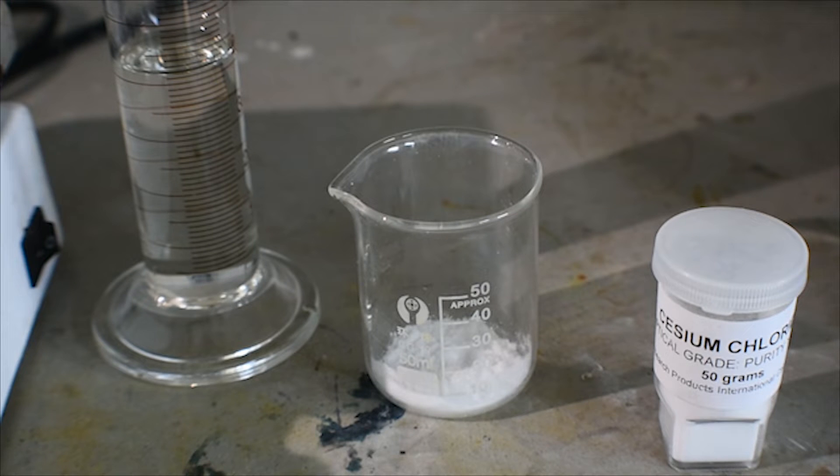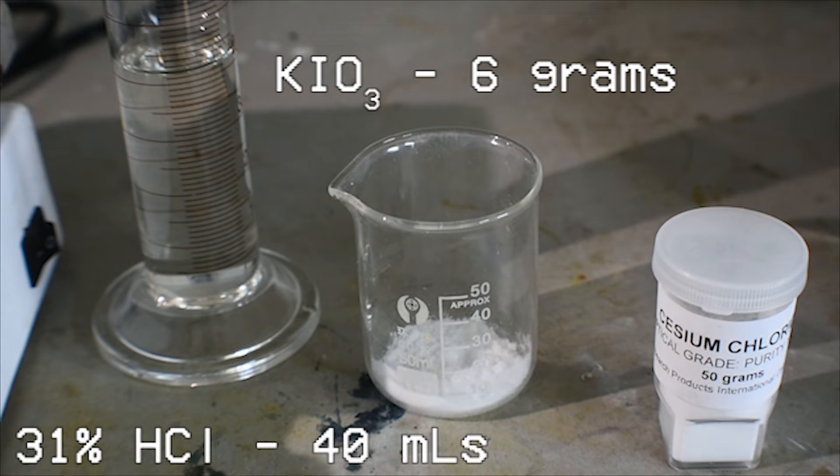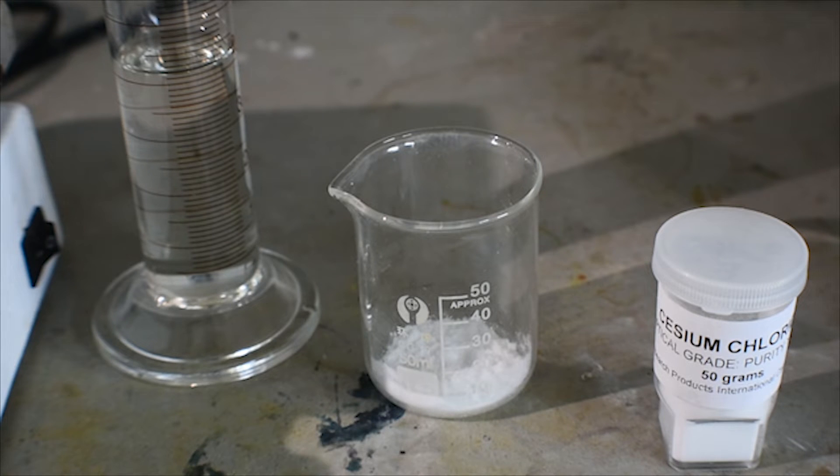The quantities I'm using only really matter for the first part, which is making the potassium tetrachloroiodate. The quantities of the reagents that we will need are 6 grams of potassium iodate and 40 milliliters of 31.45% hydrochloric acid. We will use as much cesium chloride as we need to convert all the potassium tetrachloroiodate to the cesium salt.